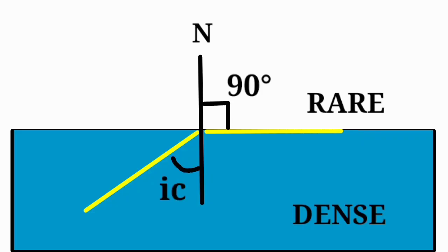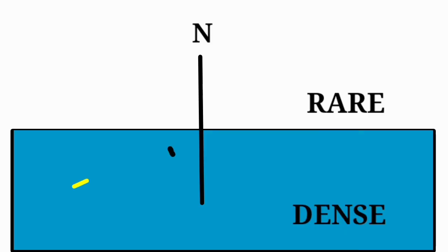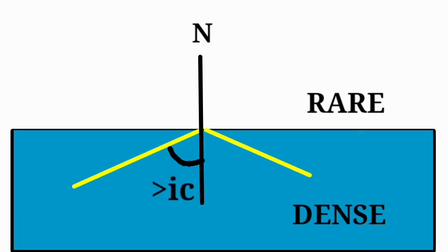So, the angle of reflection is 90 degrees. This is the angle of incidence — we call this the critical angle. For example, the critical angle of water is 48.6 degrees. When the angle of incidence exceeds the critical angle, the light is reflected like in a mirror. This is total internal reflection.